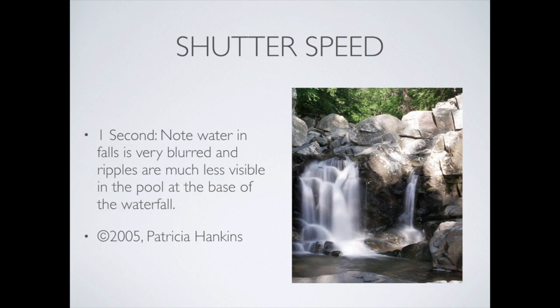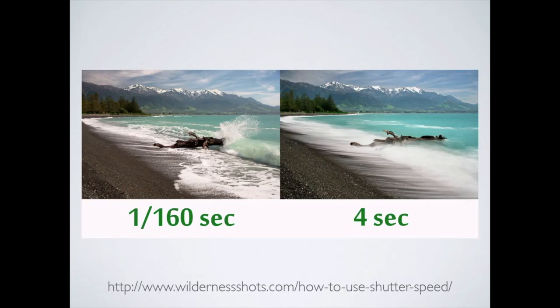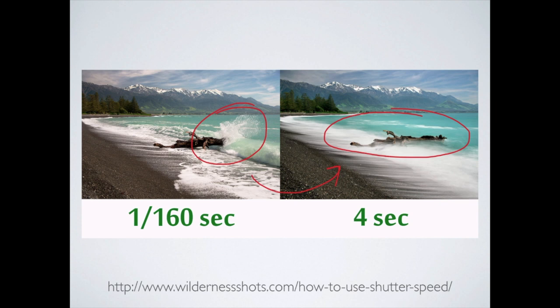Here's another example side by side. One-hundred-and-sixtieth of a second — you see the frozen spray. The alternative, almost the same image and same setup, is a four-second exposure, and you can see there is no spray here — it's all smoothed out. Everything that's moving becomes blurred. There's nothing to say one of these images is better than the other. Either one is a great image — it's a matter of preference. Are you trying to show that blurring through time, that movement, or are you trying to freeze it as if it's an instant in time? That's just the intent of the photographer.